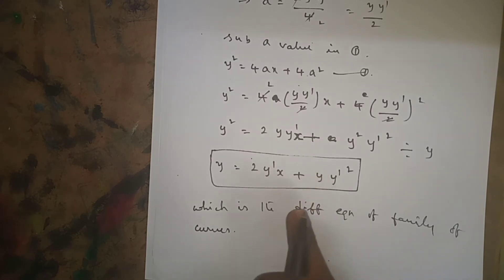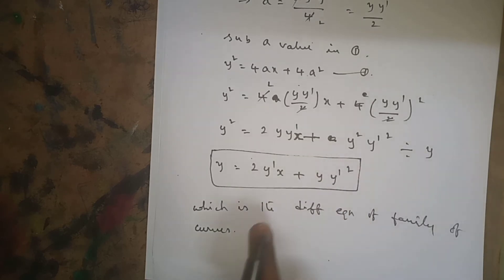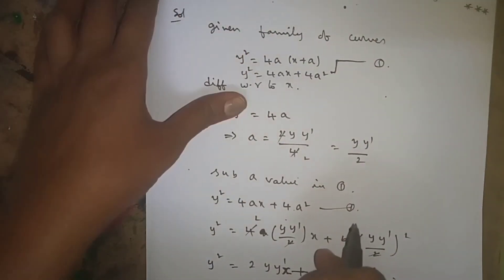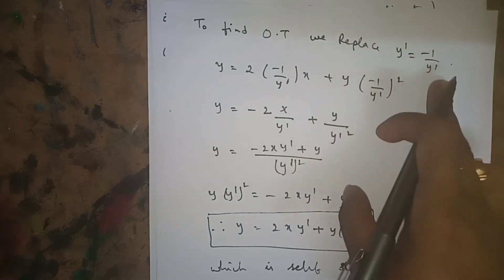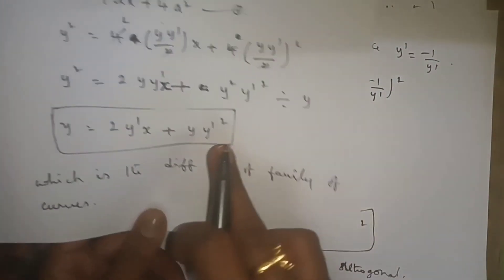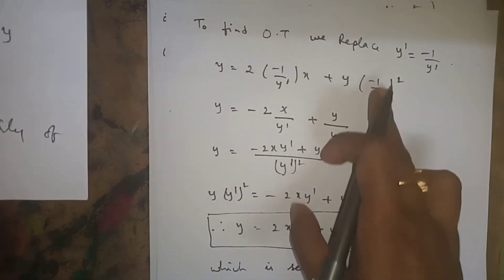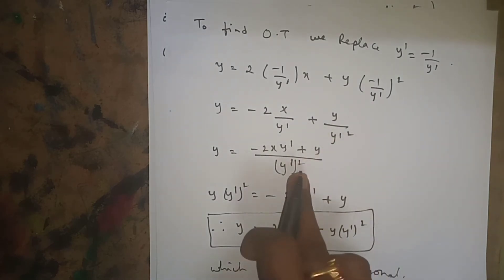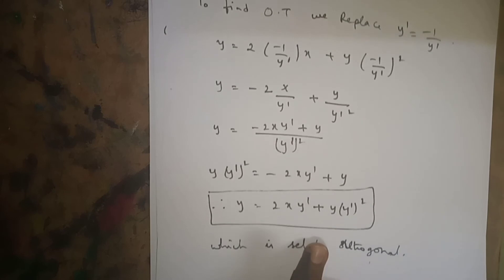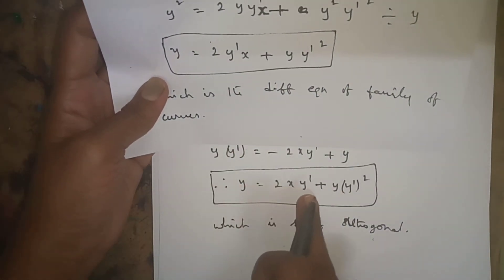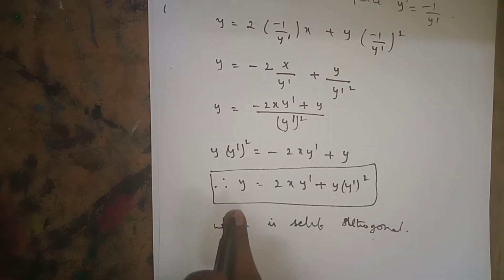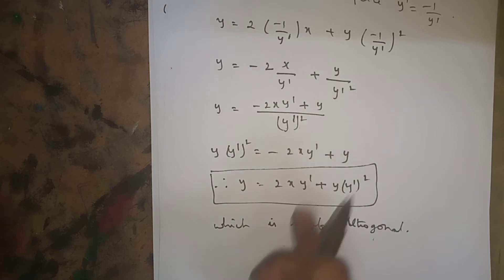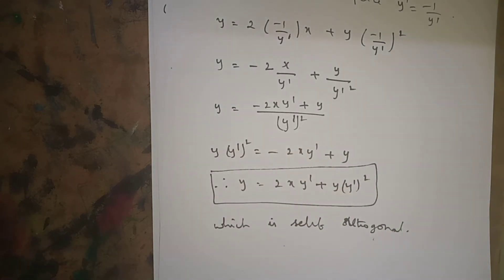To find the orthogonal trajectories, we replace y' with -1/y'. Substituting -1/y' wherever y' appears, finding the LCM, cross multiplying, and writing in order, we again get the same equation: y = 2x·y' + y·y'². Since we get the same equation back, this is self-orthogonal.